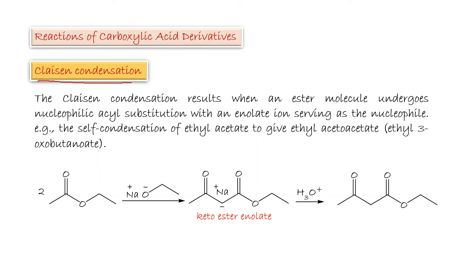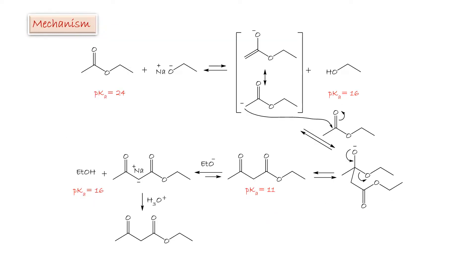Claisen Condensation. The Claisen condensation results when an ester molecule undergoes nucleophilic acyl substitution with an enolate ion serving as a nucleophile. Self-condensation of ethyl acetate is an example. Under basic conditions using ethoxide, ethanol gives a keto ester enolate, which upon acidification with dilute acid gives the beta-keto ester, ethyl acetoacetate, forming this new bond.